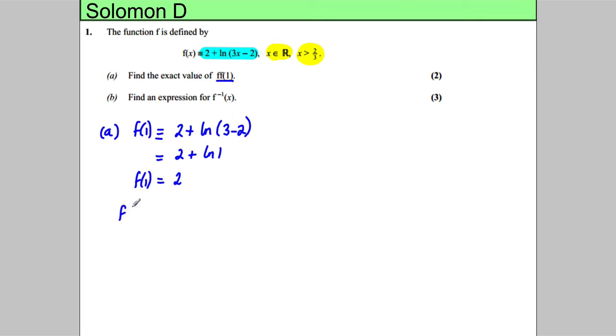And f(f(1)) therefore would be evaluated at 2, so we're going to put 2 into this. So it's 2 plus the natural logarithm of 3 times 2, which is 6, minus 2, which is 4. Therefore, f(f(1)) is simply 2 plus the natural logarithm of 4.